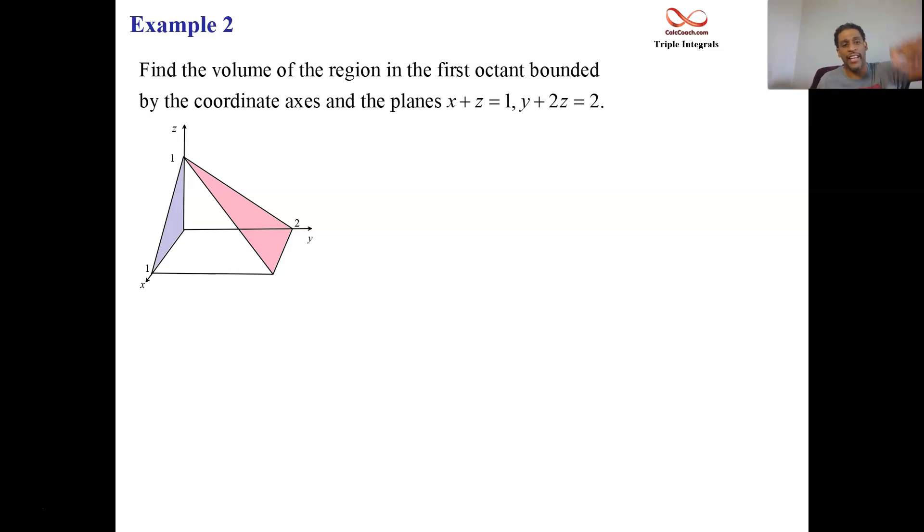Y is missing. So there's the line x plus z equals one going from one to one on the z and x axis. And then y is allowed to be anything you want it to be. That's how we get this drawing. X plus z equals one is the white plane or the white triangle, which is part of a plane. Y plus two z equals two is the pink triangle, which is part of a plane.